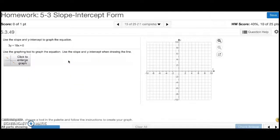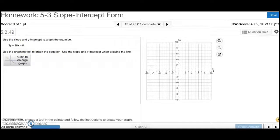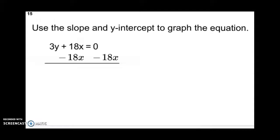Number 15. Use the slope and y-intercept to graph the equation. So, you have to put it in slope-intercept form first. So, let's do that. So, start by subtracting 18 from both sides. You get 3y equals negative 18x. Divide both sides by 3. You'll get y equals negative 6x. So, let's graph that.